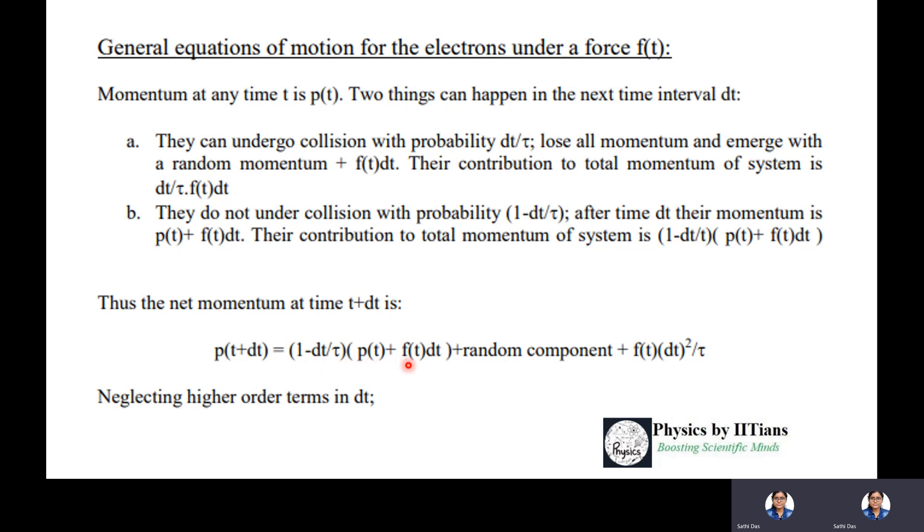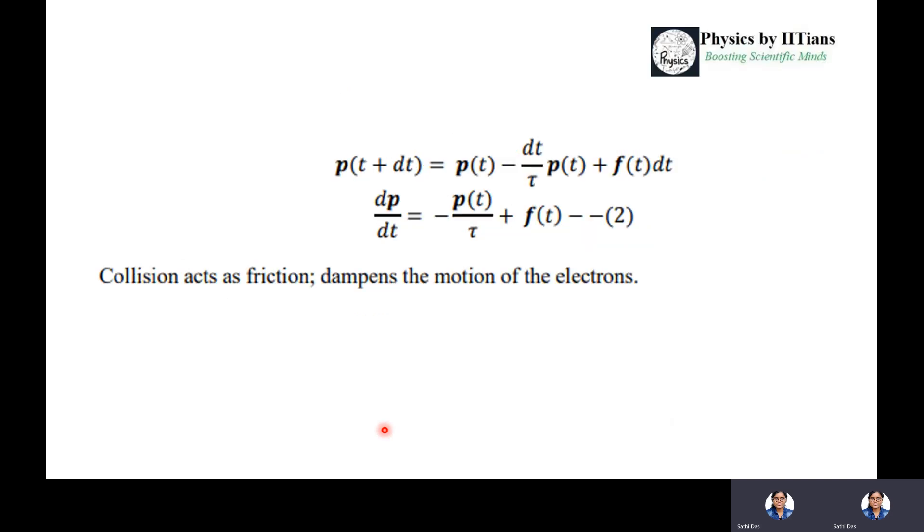The net momentum at time t + dt is p(t + dt) = (1 - dt/τ)[p(t) + F(t)dt] plus the random component plus F(t)dt²/τ. We neglect higher order terms of dt. If we solve this equation, we get dp/dt = -p(t)/τ + F(t), where this collision acts as a damping term because it is a negative term that dampens the motion of the electron.